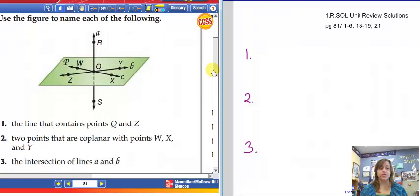In the first three questions, we're going to use this figure to name the following. Let's start with number one. We're supposed to name the line that contains points Q and Z. In our picture, the line that contains points Q and Z is this line here. We can name it line QZ, line QY since Y is also on it, even YZ or line B. I'm going to just go ahead and call that line B.